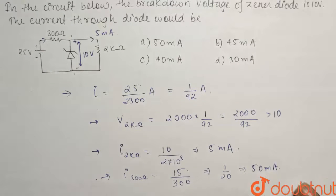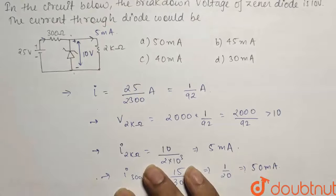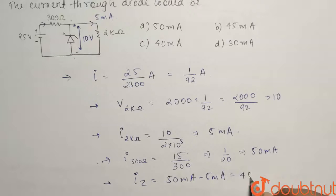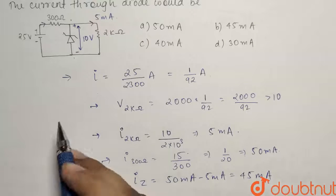So if we depict the current in Zener as Iz, then what we can write is Iz will be nothing but the subtraction that is 50 milliamperes minus 5 milliamperes, that is equals to 45 milliamperes. Here we applied the Kirchhoff's current rule.